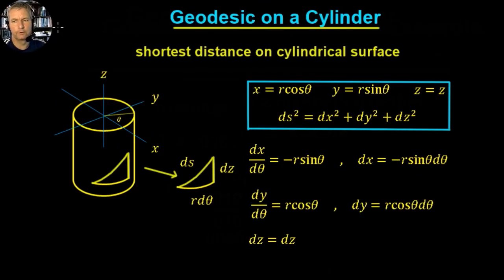In this video we're going to look at the geodesic on a cylinder. The geodesic means the shortest distance between two points on a cylindrical surface.